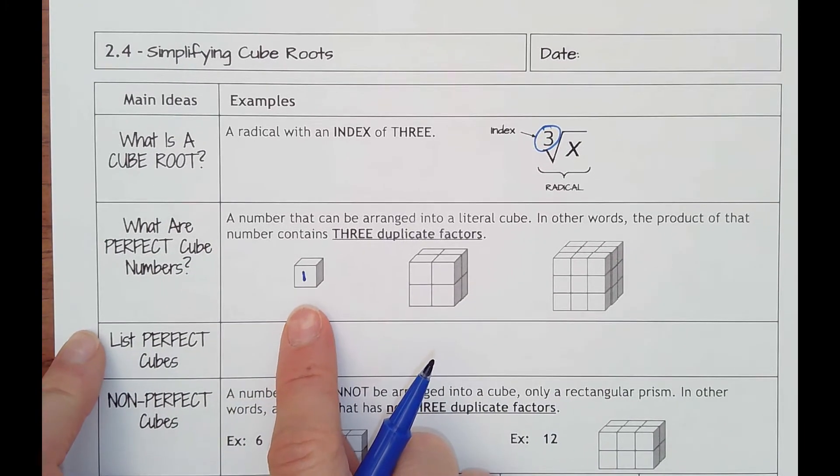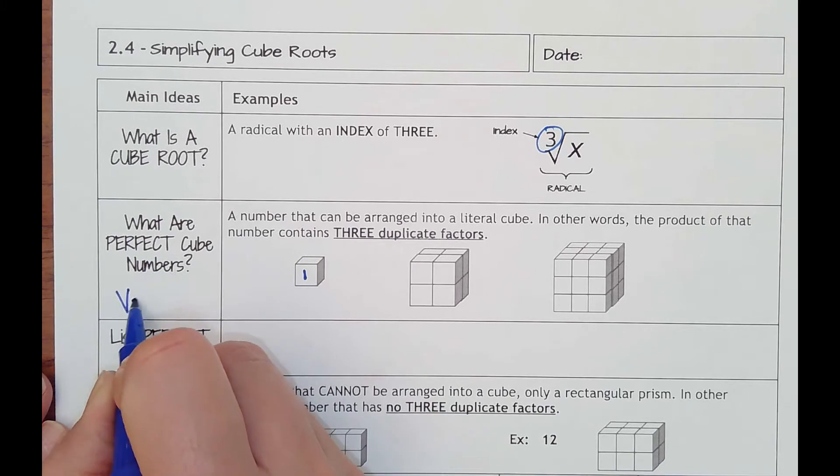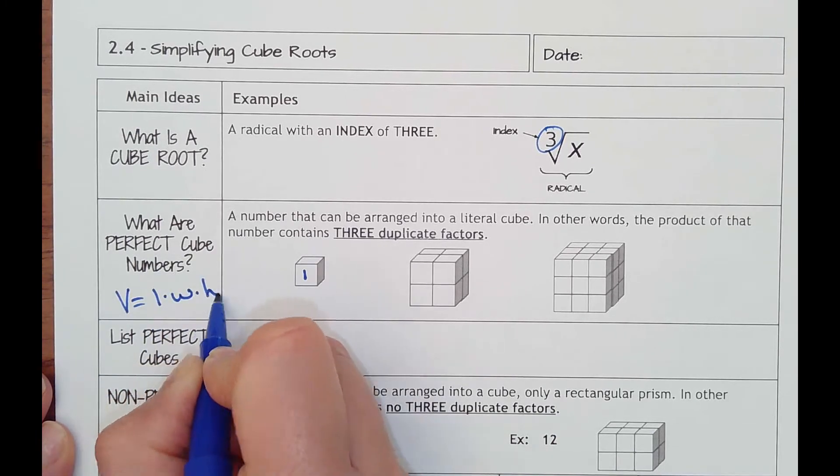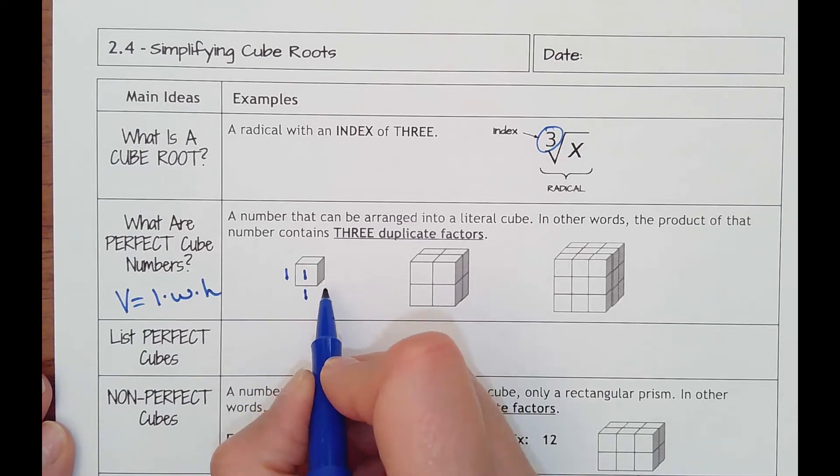The first smallest cube we can make is one. Since we're in three-dimensional objects now of cubes, this is dealing with volume. The way to find volume is length times width times height.